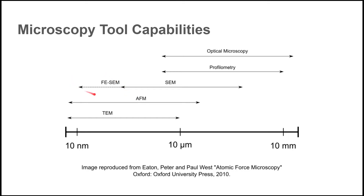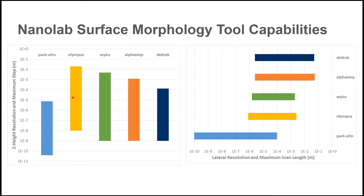Nanolab's SEMs are both field emission SEMs. The lateral resolution of an AFM depends on the probe chosen for the measurement, but can be as small as a few nanometers. Z resolution is measured in picometers. The only technique with consistently higher resolution than AFM is TEM. The trade-off with this high resolution is a limitation on the maximum scale of the measurement. The Park AFM cannot measure a step taller than 7.5 microns, and the imageable area is only 100 by 100 microns square.